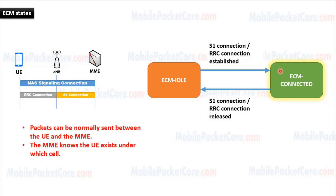In ECM connected state, the NAS signaling connection is established between the UE and the MME so that packets can be sent and received normally between the UE and the MME. In addition, in ECM connected state, the MME knows the location of the UE to the most accurate level, which is the cell level.